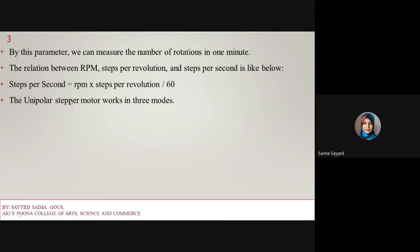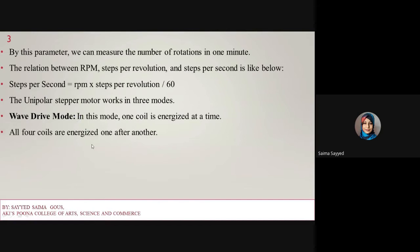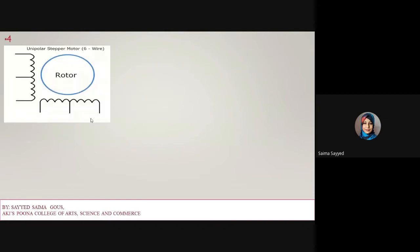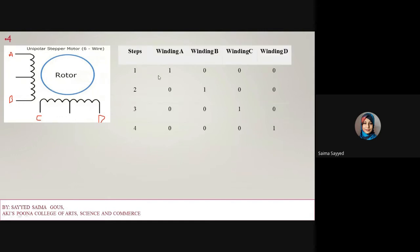A unipolar stepper motor works in three different modes. The first mode is wave drive mode. In this mode one coil is energized at a time. There are four coils, and all four coils are energized one after another. The windings can be named A, B, C, D or A, A-dash, B, B-dash. In step one winding A energizes, then in step two winding B, then step three C, and step four D.